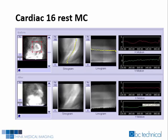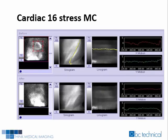Cardiac XVI's resting study showed around three pixels of motion. The motion-corrected dataset exaggerated the motion and displayed over five pixels of motion after automatic motion correction was applied — increasing the motion from three to five pixels. Cardiac XVI's stress study showed around two pixels of motion. After automatic motion correction was applied, the corrected dataset still displayed two to three pixels of motion, showing more motion than the non-corrected dataset.